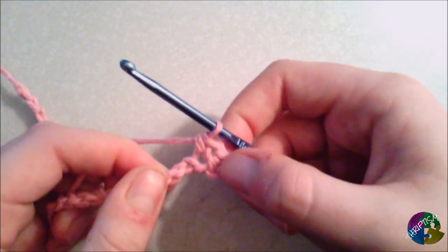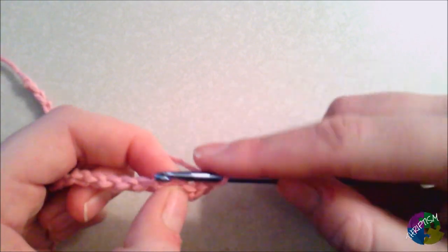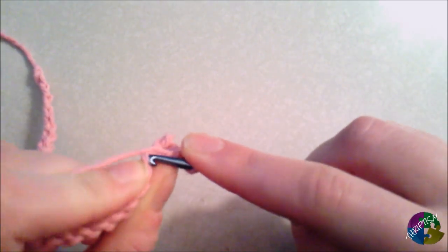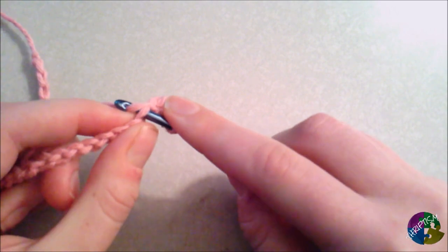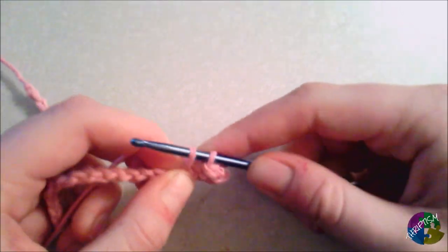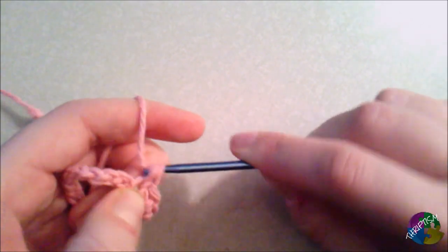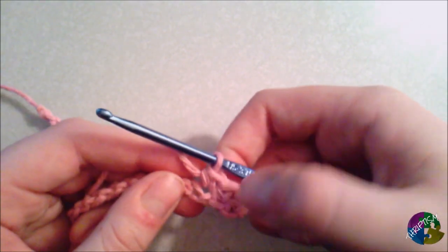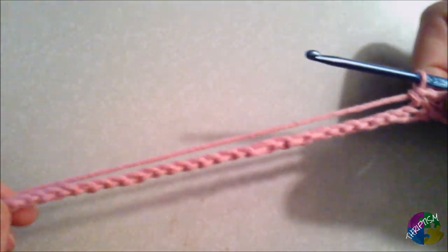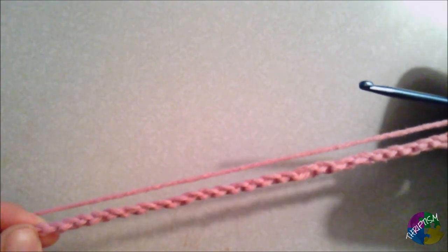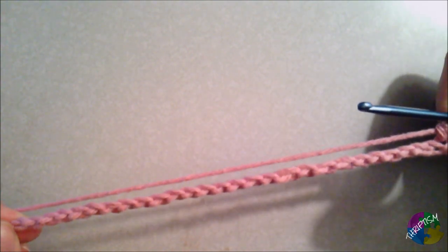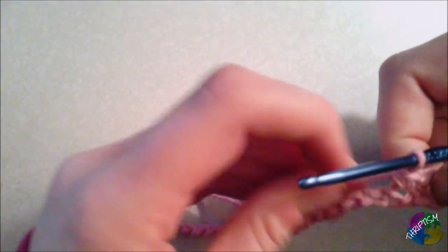Now yarn over again and pull through both of those stitches. So we'll practice one more and then we'll just keep going through the end of the row. So we'll go through at the top of the chain, yarn over, pull through, yarn over again and pull through both. Now in order to continue this, we will need to continue doing single crochets through the rest of the chain. So we'll go ahead and do that now.